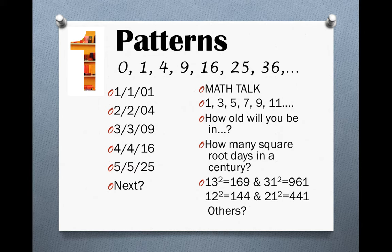They could just find the perfect squares. They could look at the pattern within the perfect squares. They can see the difference between the numbers go from 1, 3, 5, 7, 9, etc., all odd numbers. Maybe you could do a math talk on how old will you be in a certain year when another square root day happens. Find how many square root days are going to occur in a century.